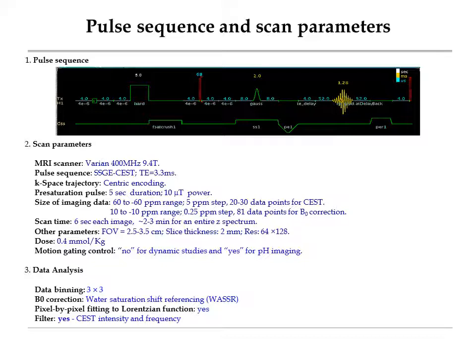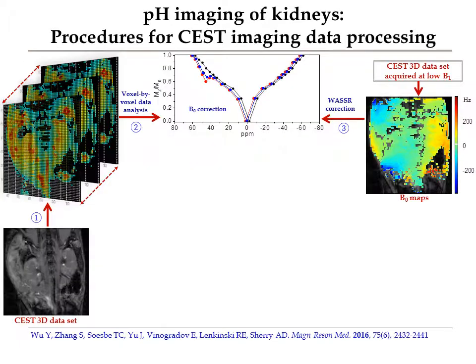This will take around 2 to 3 minutes to acquire each CEST image data set. To save scan time, respiratory gating was not used in dynamic studies that investigated the dynamic changes of CEST signals in kidneys. In terms of CEST imaging data analysis, the CEST signal in vivo suffers from signal interference from B0 inhomogeneities and background signals from MT effects. MRI data processing procedures have to be established to resolve these issues of signal interference. Specifically, in the CEST image data set, each voxel will give a unique CEST Z-spectrum.